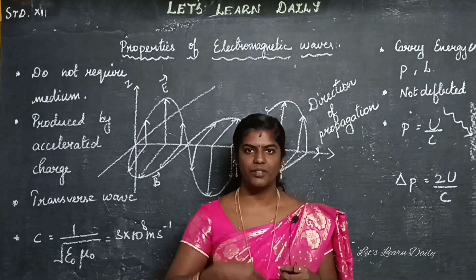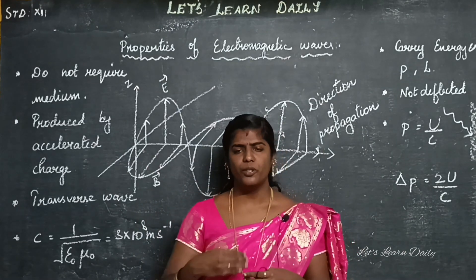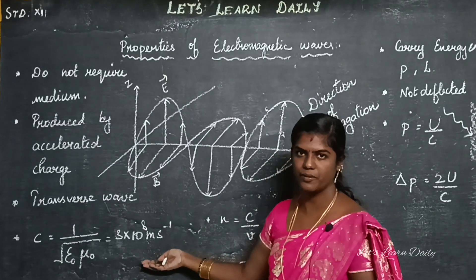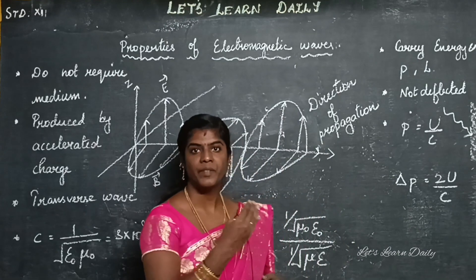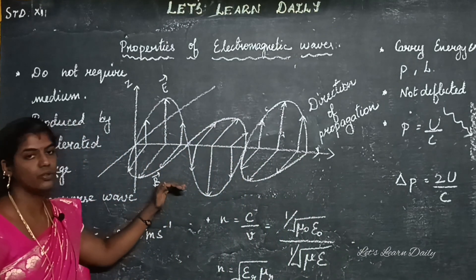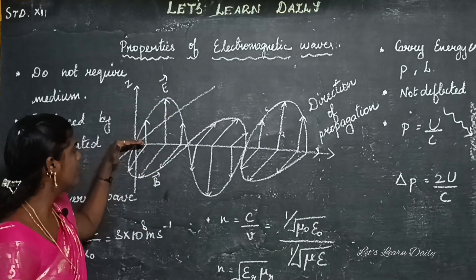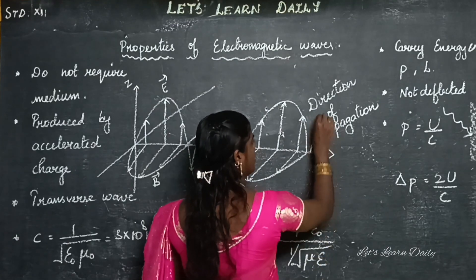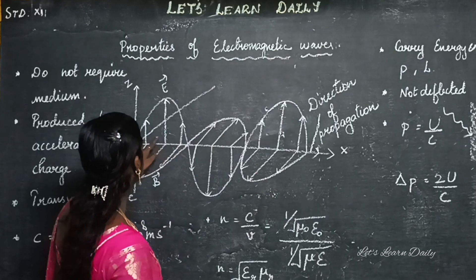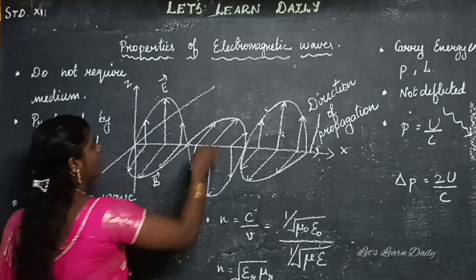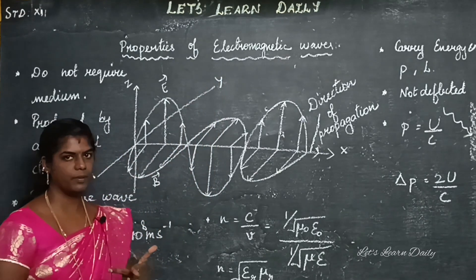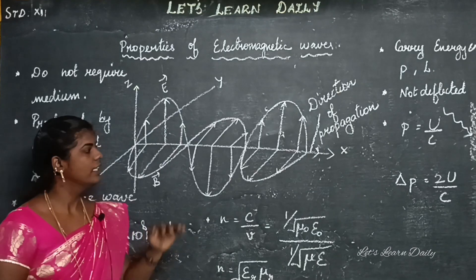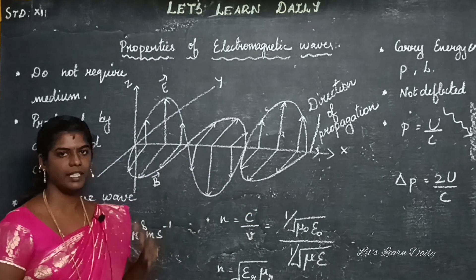The electric field and magnetic field are perpendicular to each other. If you evaluate the values, electromagnetic wave speed equals 3×10⁸ m/s. The electric field and magnetic field travel perpendicular to the direction of propagation — propagation is in x, electric field in z, magnetic field in y — so it is a transverse wave.